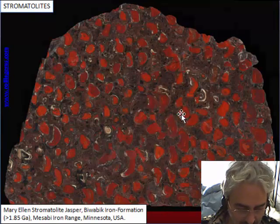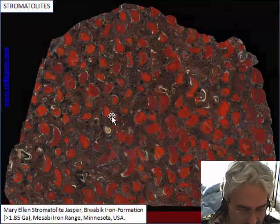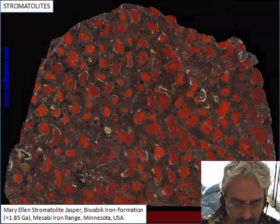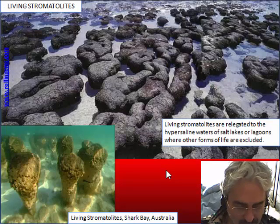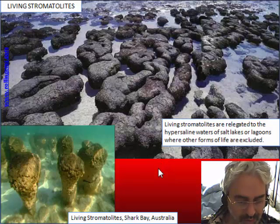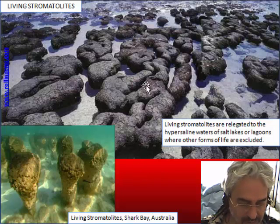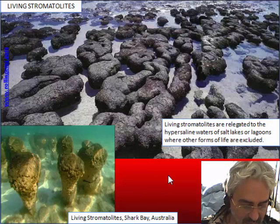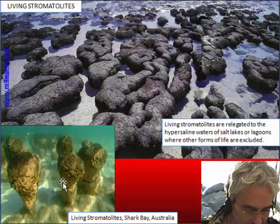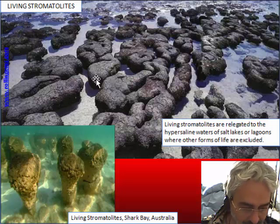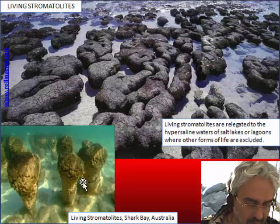Because stromatolite is an organism not very well known to people, I want to show how a living organism looks. This is an example from Shark Bay in Australia — it is a national park. In the tidal area, stromatolites form like a small reef made of these structures.